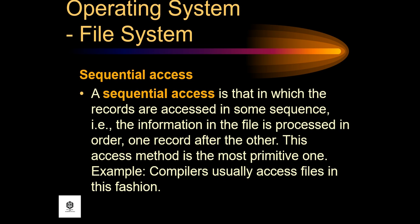In sequential access, records are accessed in sequence — the information in the file is processed in order, one record after the other. This access method is the most primitive one. For example, compilers usually access files in this fashion.